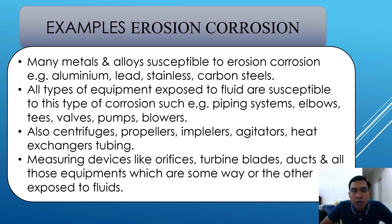Many metals and alloys are susceptible to erosion corrosion, for example aluminum, lead, stainless steel, and carbon steel. All types of equipment exposed to fluid are susceptible to this type of corrosion, such as piping systems, elbows, valves, pumps, and blowers. Also centrifuges, propellers, impellers, heat exchanger tubing, measuring devices such as orifice plates, ducts, and all equipment that is in some way exposed to fluid.